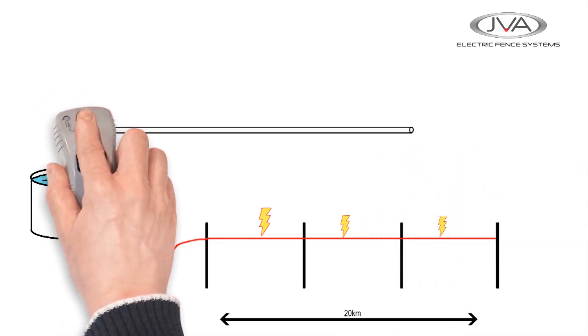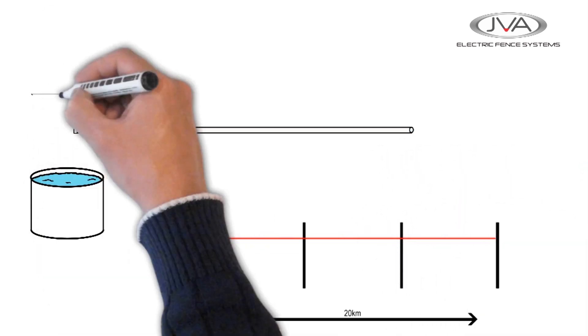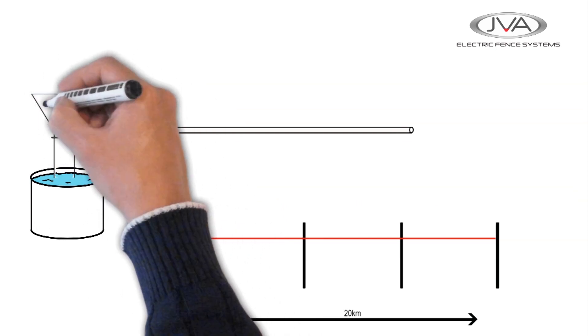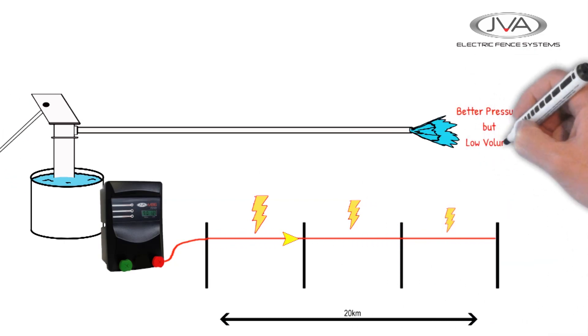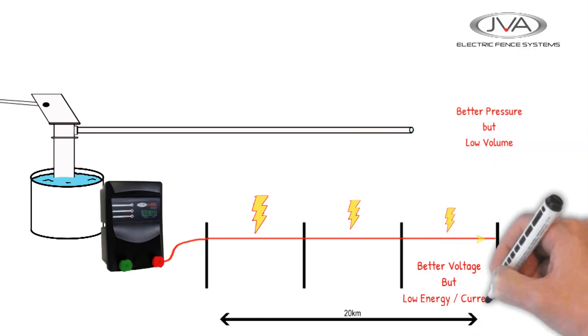Now if we were to put a bigger pump onto our water pipe, we would increase the pressure going through our pipe. At the same time, if we were to put a bigger energizer onto the fence, then we would get a higher voltage on the fence line. But we are not maximizing the volume or the energy going through.